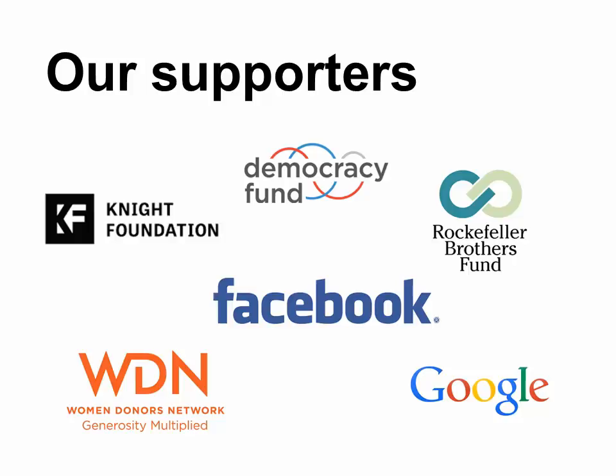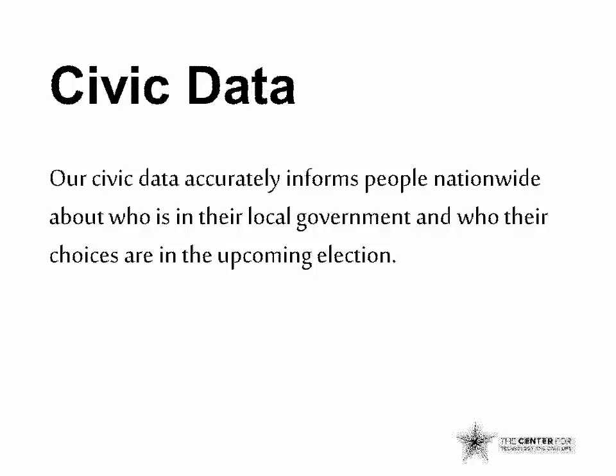CTCL has two main programs. Our civic data team does absolutely amazing work. They collect, standardize, and publish the nation's largest civic data sets that answer two big questions: What's on your ballot? And who are your elected officials? Through partnerships, they put that information in places where people are on a regular basis. Here are two cool examples from last November.